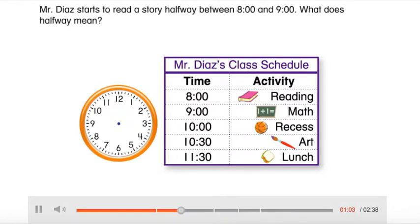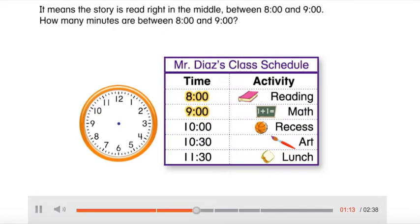Mr. Diaz starts to read a story halfway between 8 o'clock and 9 o'clock. What does halfway mean? It means the story is read right in the middle between 8 o'clock and 9 o'clock.